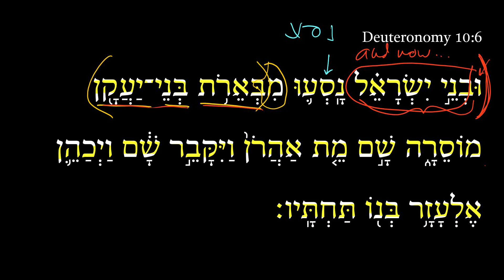Then we get Moserah. This is an adverbial accusative of place — an adverbial accusative of place. It does not have the accusative he on it, namely the directional he, and yet it still is functioning the same way. So we literally get 'to Moserah.'